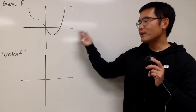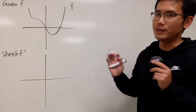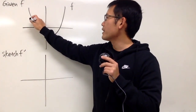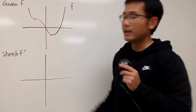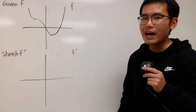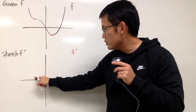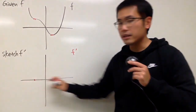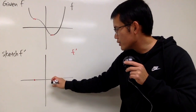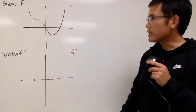We are given the graph of the original, and we will sketch its derivative. First of all, look for the horizontal tangent lines. We can see that we have one right here and another one right here. So when we make our f-prime graph, at these points when we go down, it should be 0 — namely on the x-axis.